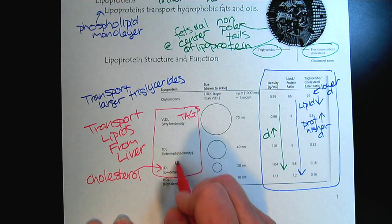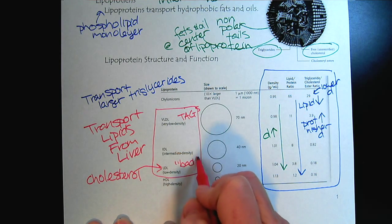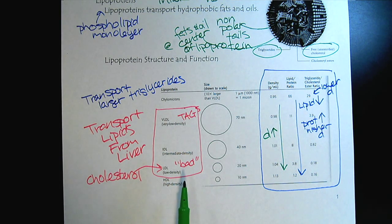And then the very low density is transporting cholesterol from the liver. This one is characterized by the name, we tend to call it the bad cholesterol. I'm not going to promote a value judgment against the lipoproteins, but if you're in conversation, this is the one they're referring to as the bad one.